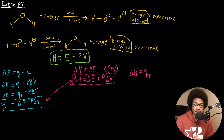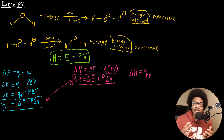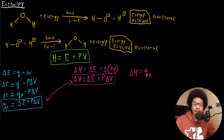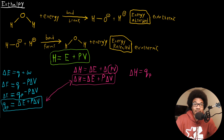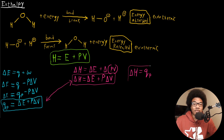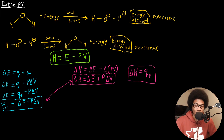Enthalpy is the heat transfer for a constant pressure process, and this is a constant refrain throughout chemistry. A lot of chemistry is done at constant pressure — on benchtops in labs, at a constant steady atmospheric pressure. These thermodynamic potentials that derive from constant pressure turn out to be very useful to chemists.